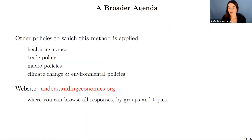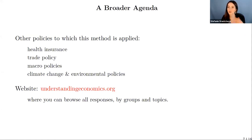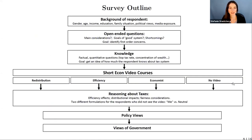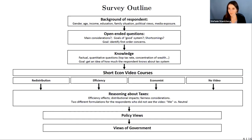Once we have more structure and understand the primitives better, we can better see where disagreement lies, what shapes policy views, and where intervention might be needed — for instance, if there are correctable gaps in knowledge or inconsistent reasoning — versus where we should accept things as given, such as when people hold very different notions of fairness. I've applied the same logic to other policies including trade, health insurance, macro policy, and climate change. If you're interested, you can browse the website understandingeconomics.org to see answers to various questions by groups of respondents.